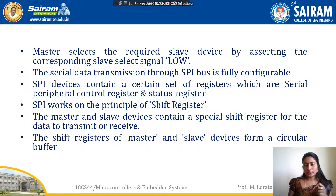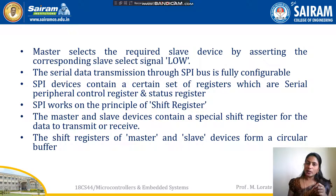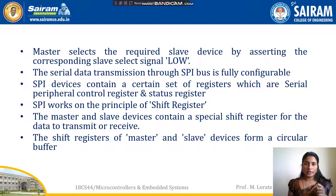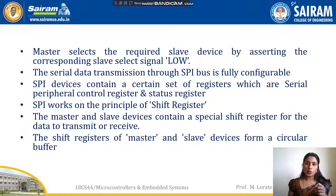There are two sets of registers: the Serial Peripheral Control Register and the Status Register. The Serial Peripheral Control Register holds configuration parameters such as master/slave selection, baud rate selection for communication, and clock signal selection for communication. The Status Register holds the status of the transmission and reception.